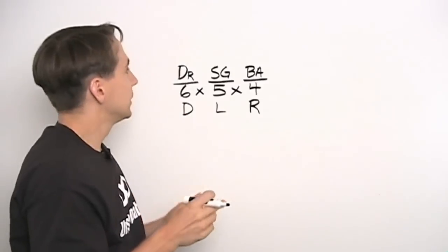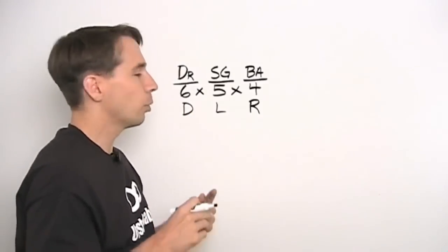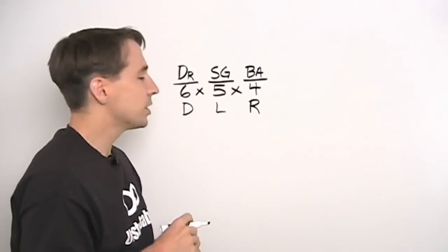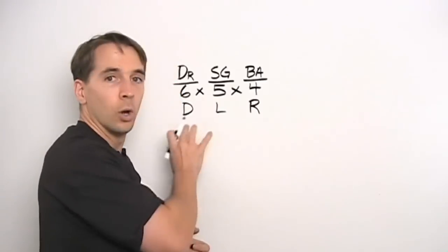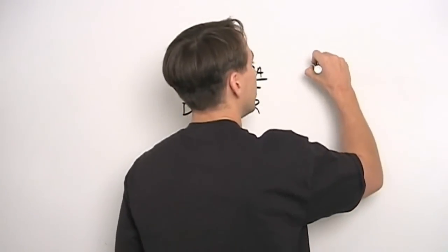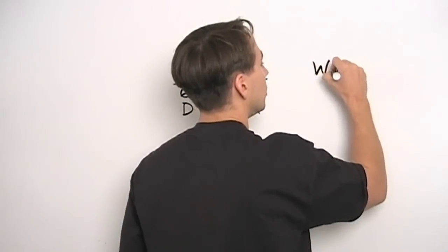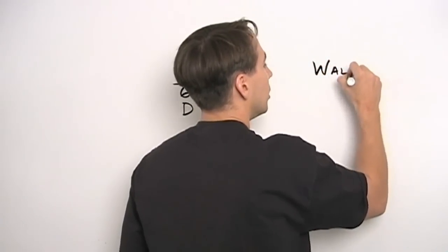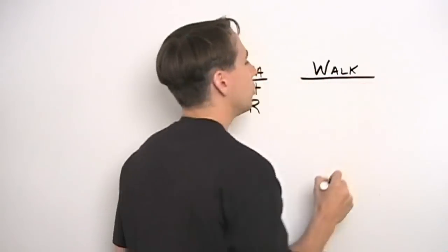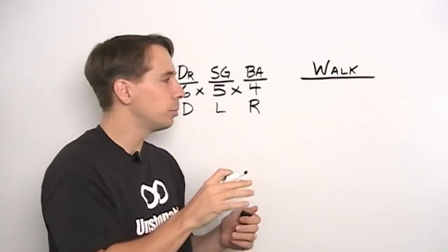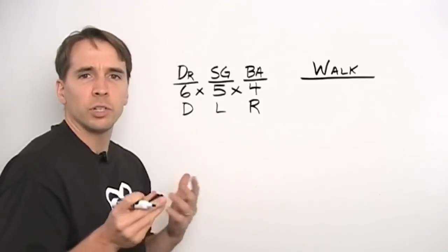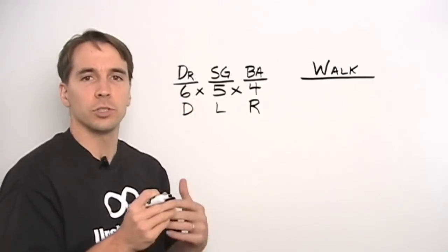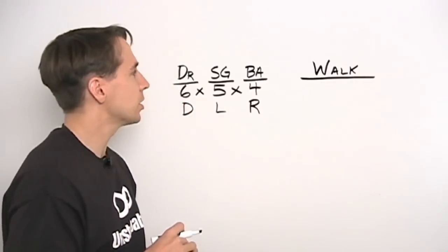So, if we're going to drive, we have 6 times 5 times 4 ways to go get the pizza. Unfortunately, as you know, gas has gotten really expensive, so we don't drive anymore. The pizza place is close enough, we walk. And we still send 3 people, we pick 3 of the 6 of us to go walk down, but the difference now is the order doesn't really matter. We don't have a driver of the group, we're just a group of 3 people going down to get the pizza.